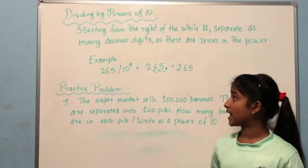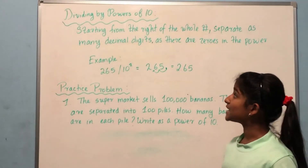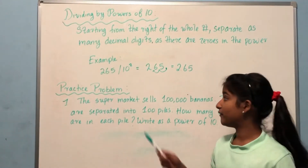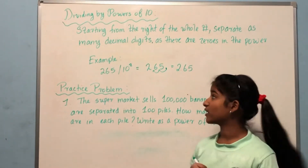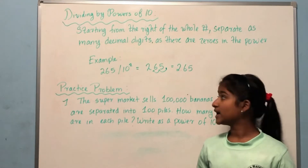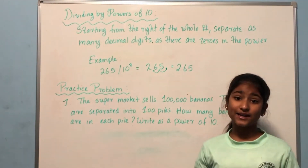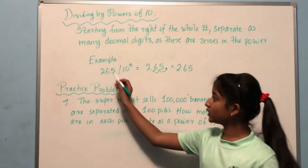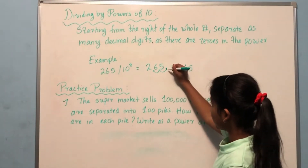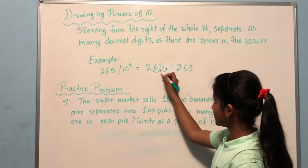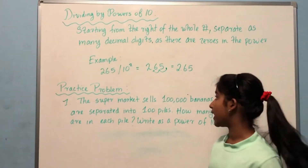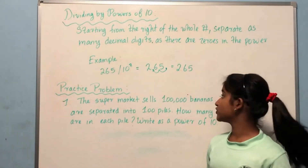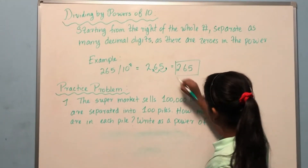Now let's learn how to divide by powers of ten. Starting from the right of the whole number, separate as many decimal digits as there are zeros in the power. For example, we're dividing 265 by ten to the power of two. Ten to the power of two equals one hundred since the power is two. So we're dividing 265 by one hundred, meaning we move the decimal point two places to the left. The answer is 2.65.